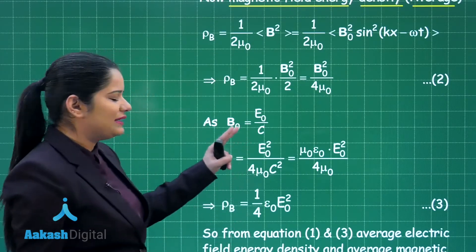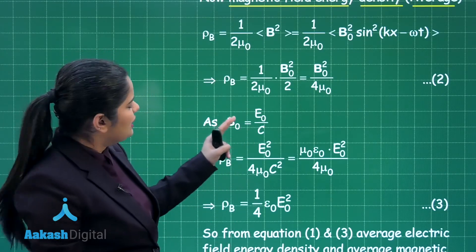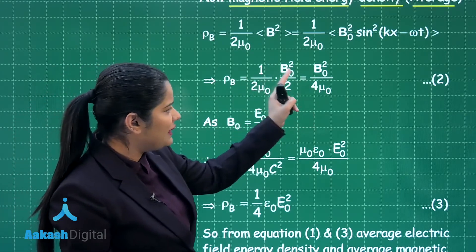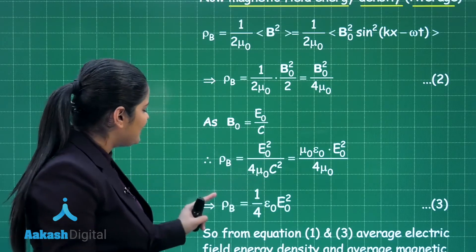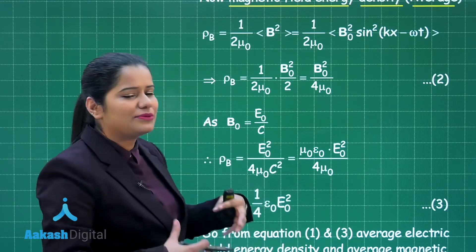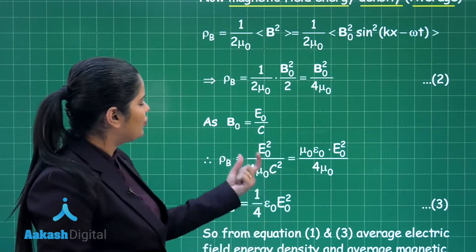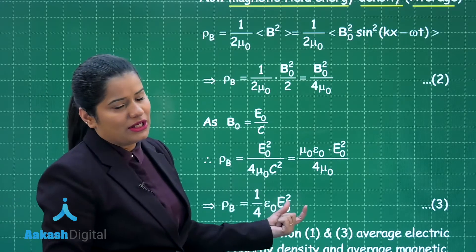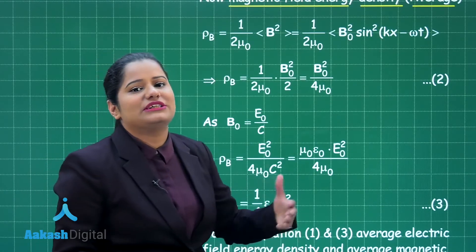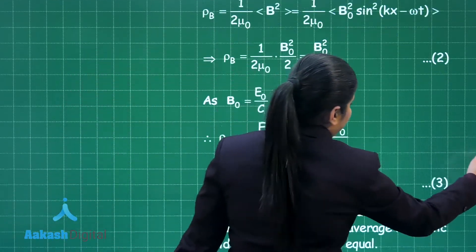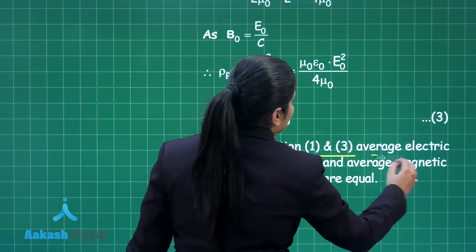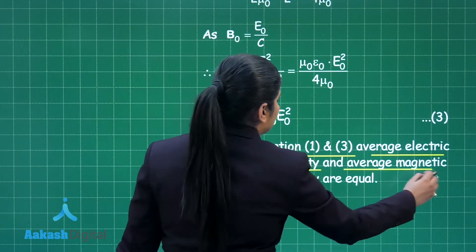Using the relation B-naught equals E-naught by c, and substituting B-naught in terms of E-naught into equation 2, the average magnetic field energy density becomes (1/4) epsilon-naught E-naught squared — mark this as equation 3. This is the same expression derived for the average electric field energy density in equation 1, so equations 1 and 3 are equal, proving the result.